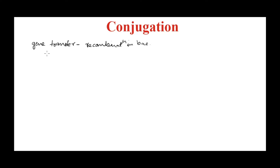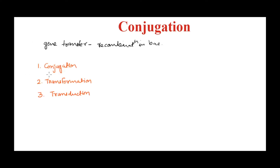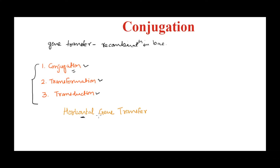Welcome back. Today we are starting with gene transfer in bacteria, or recombination in bacteria. There are three types of gene transfer methods in bacteria: conjugation, transformation, and transduction. In today's video we will talk about conjugation, and in the next two videos we will continue with transformation and transduction. This type of gene transfer in bacteria is also known as horizontal gene transfer.